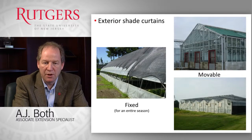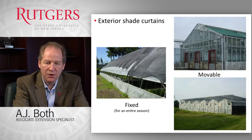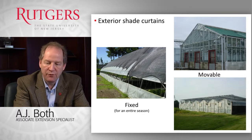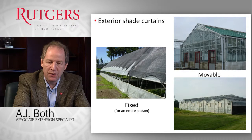Here are some examples of outside curtains. On the left-hand side, a netting that's installed more or less permanently throughout the growing season. On the right-hand side, two outside installations that can be changed — some manually, some on a computer-controlled system. So you don't have to install shading inside; you can also install these curtain materials on the outside of the structure.